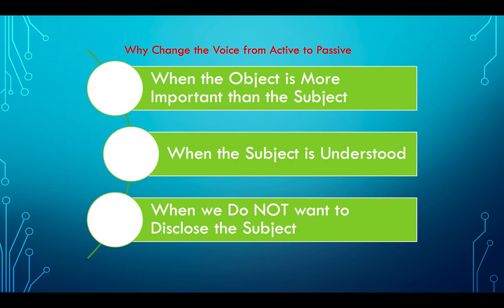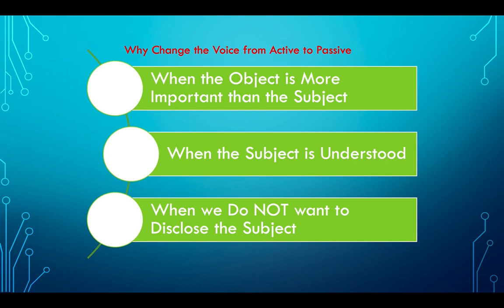So why do we have to write certain sentences in the passive form? Let me deal with those few situations first. Most of the times we use the passive form when the object in the sentence is more important than the subject. The subject is the 'karta' — the one who is performing the action. Normally the person performing the action is more important, but there are some situations when the object — the receiver — is more important.